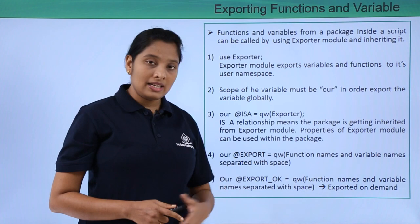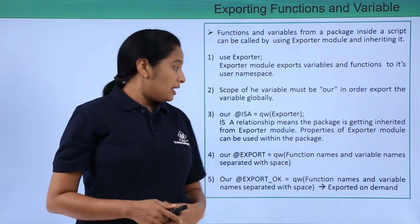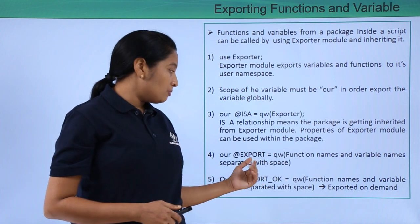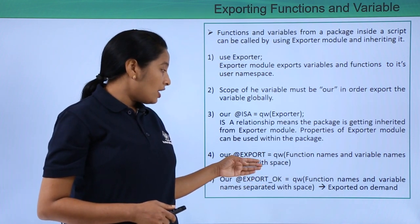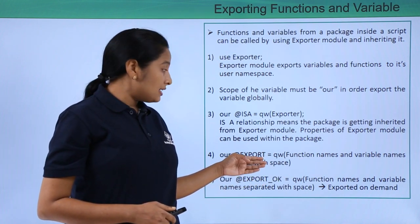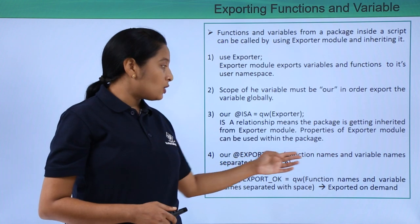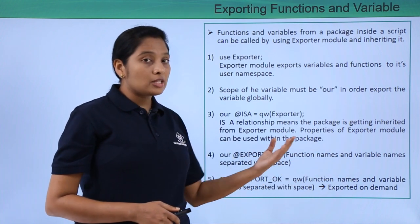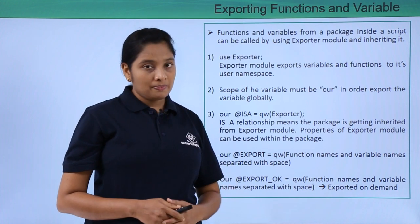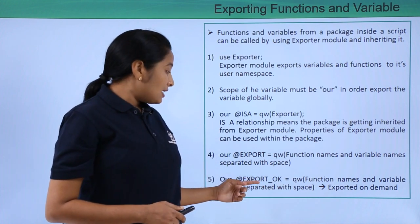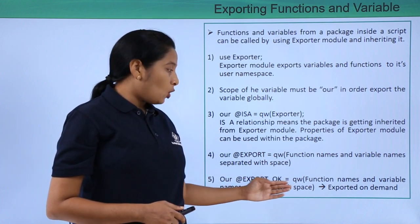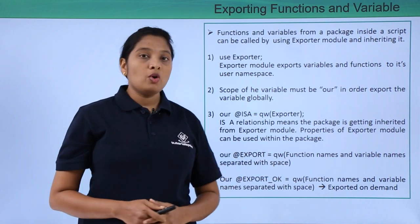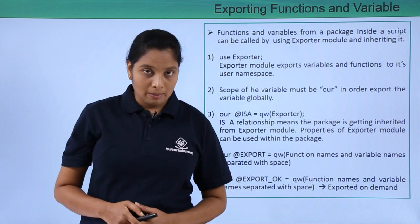To export all the variable or subroutine names, you make use of the @EXPORT array. In this array, you give the subroutine names and the variable names which you want to export to other scripts. There is also an array called @EXPORT_OK, and there is a difference between these two, which I am going to explain with a practical example.